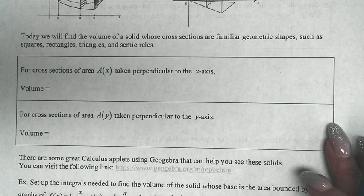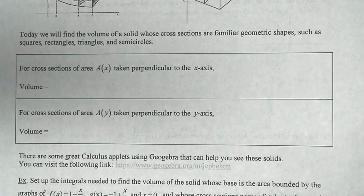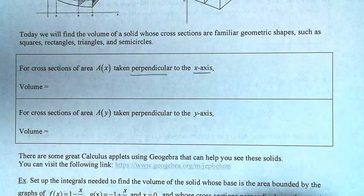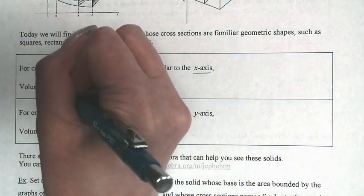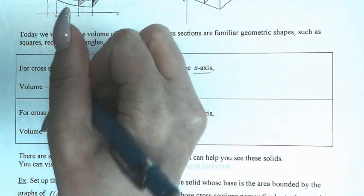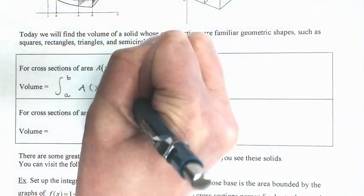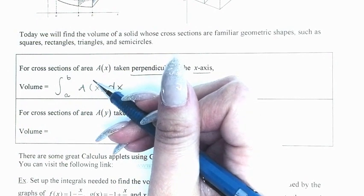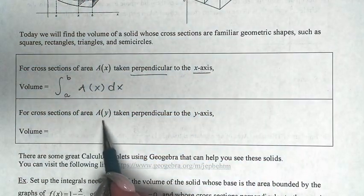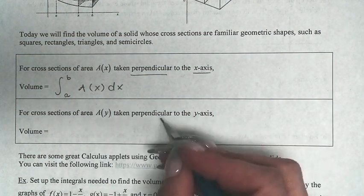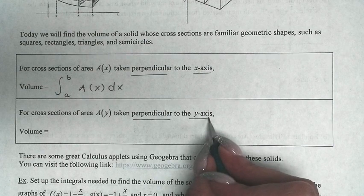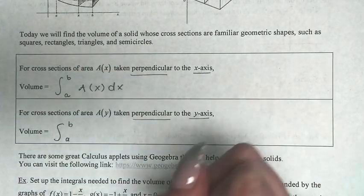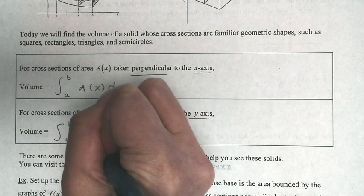Now let's start defining how this connects to calculus. For cross sections of area that depends on x, taken perpendicular to the x-axis, the volume is going to be equal to the integral from a to b of A(x) dx. Please note that the limits of integration depend on the x-axis. On the other hand, for cross sections of area A that depends on y, taken perpendicular to the y-axis, the volume is going to be equal to the integral from a to b of A(y) dy, where a and b depend on the y-axis.